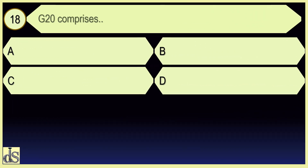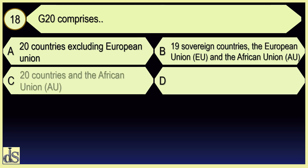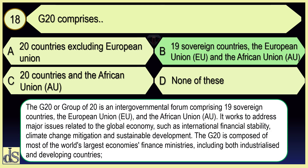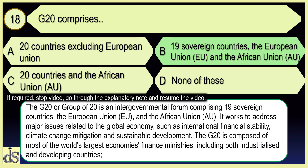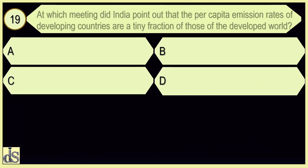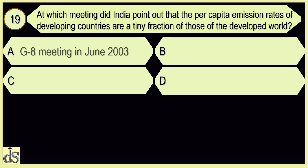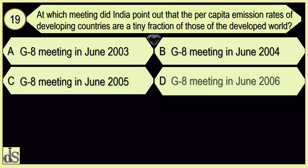The G20 comprises 19 sovereign countries, the European Union and the African Union. At which meeting did India point out that the per capita emission rates of developing countries are a tiny fraction of those of the developed world? The G8 meeting in June 2015.